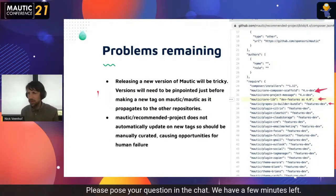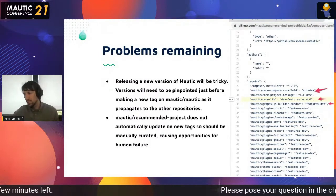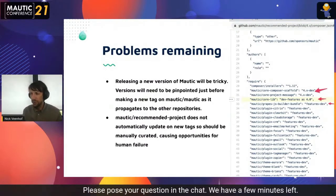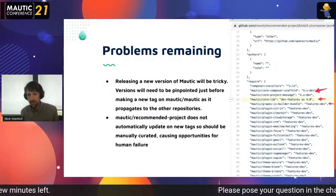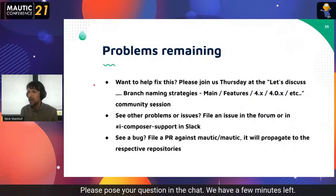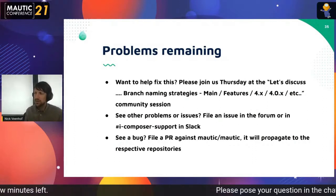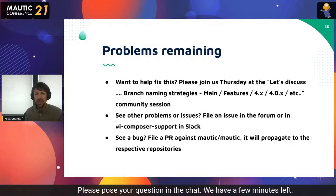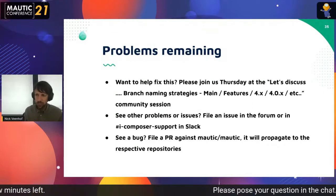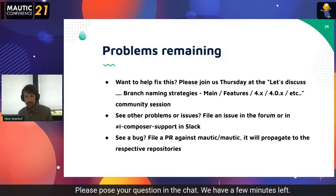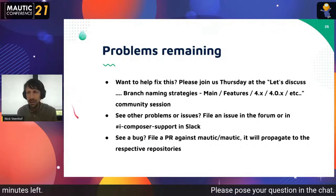Releasing a new version of Mautic will be tricky right now because it's not automated and because of the naming issue. All dependencies on a release should point to the stable release at that point, so the recommended project needs to be in sync with the release — either manually or automatically. Plugins should not necessarily be updated on the same cycle; only Mautic core needs to be updated. A plugin could be on version 1.x and doesn't have to follow the 4.x branch strategy. Please join us Thursday to discuss branch naming and release management.